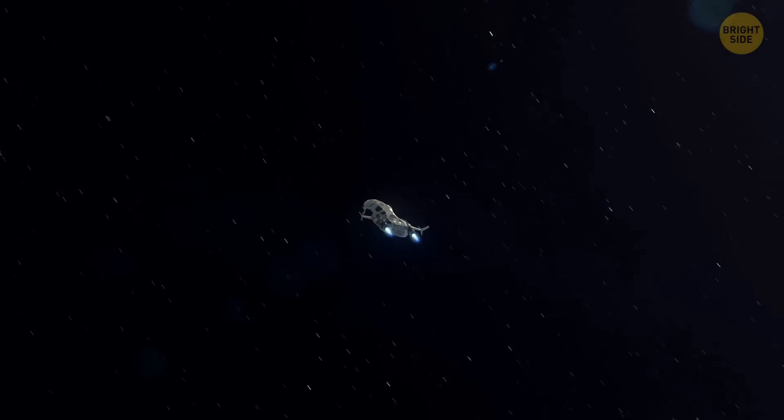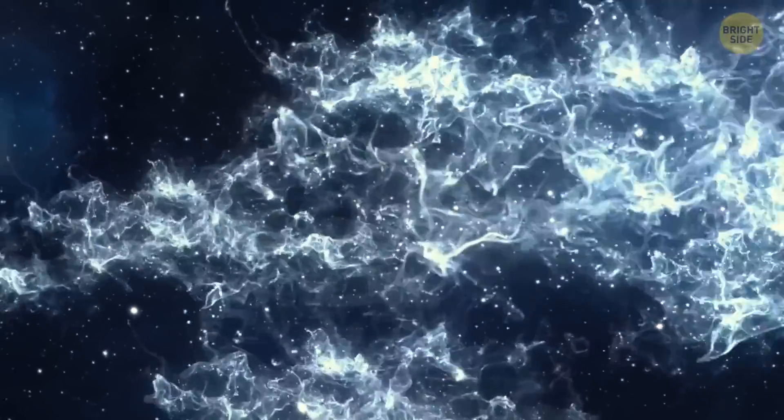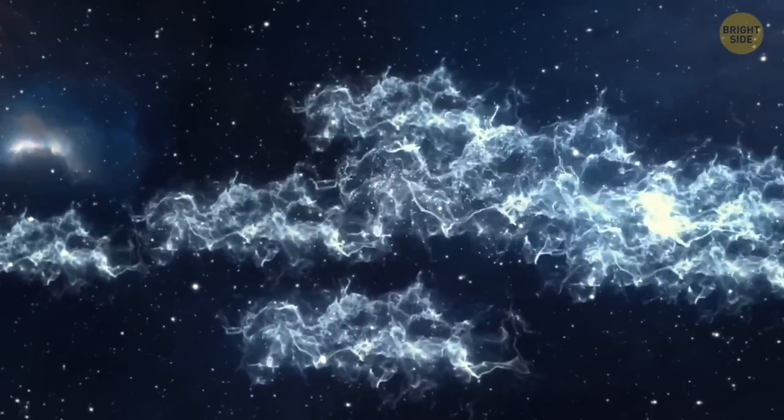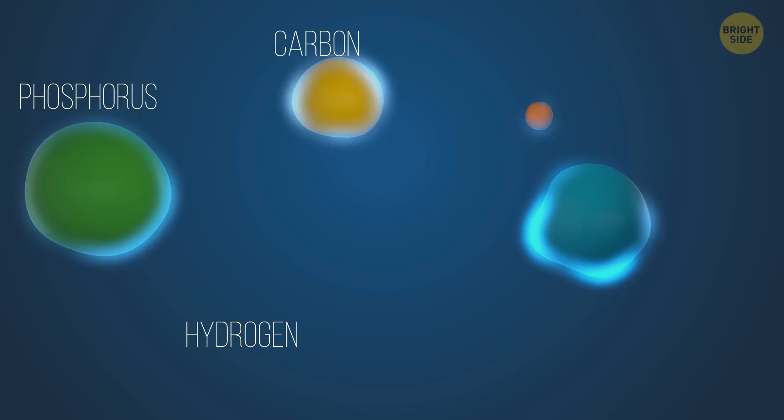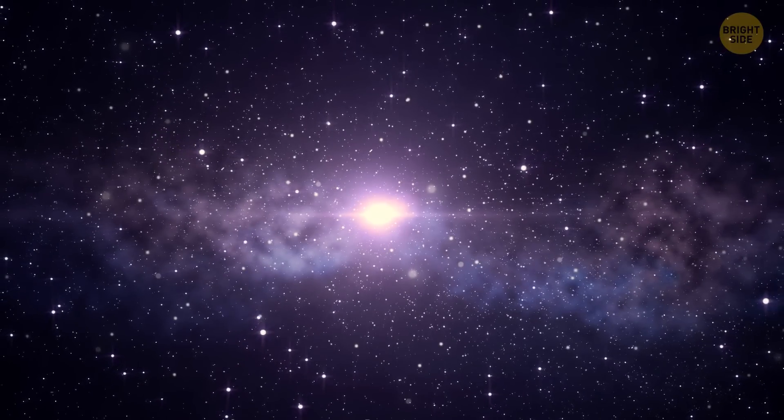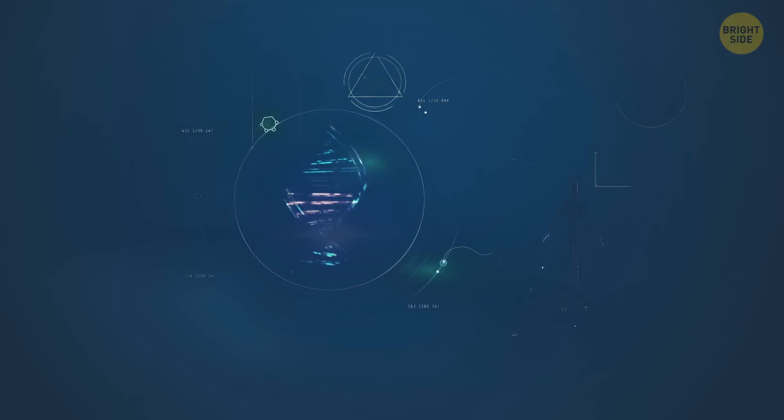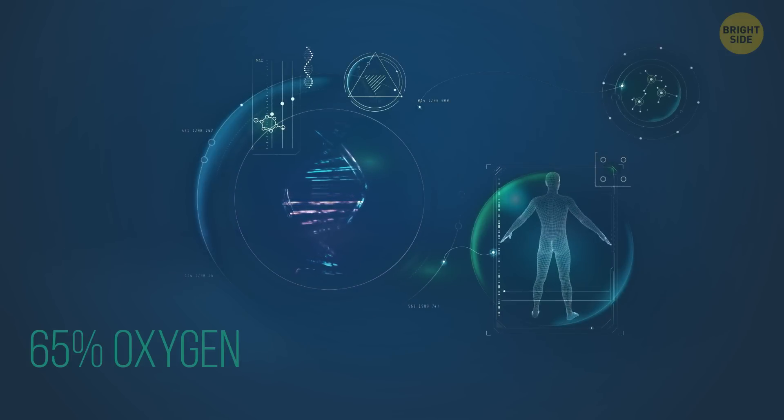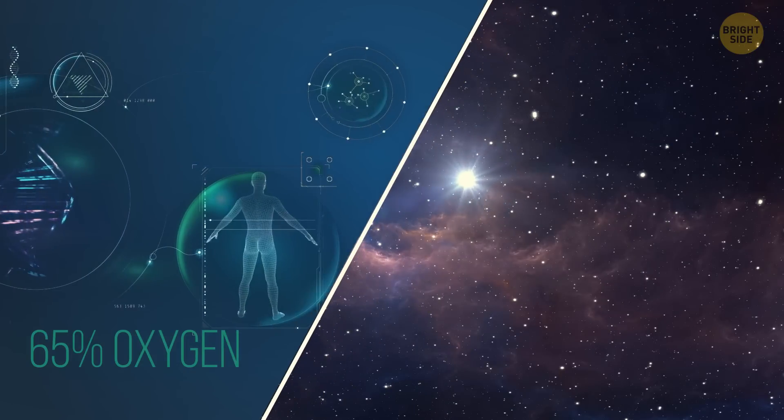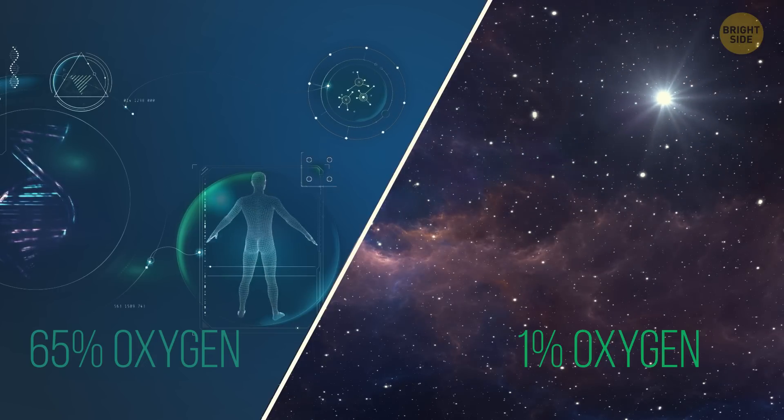We are all made of stardust. 97% of atoms we're made of are the same as the material our galaxy consists of. The building blocks of life is a term we use for a group of elements that are vital for life on Earth. And stars have these elements too, but in different proportions. For instance, we are 65% oxygen by our mass, whereas elements we measure in space, like the spectra of stars, have less than 1% of oxygen.